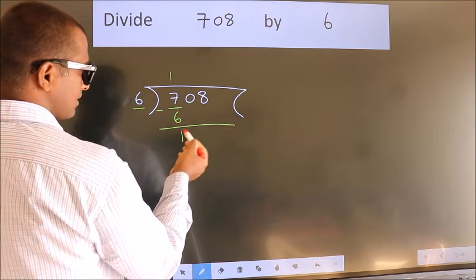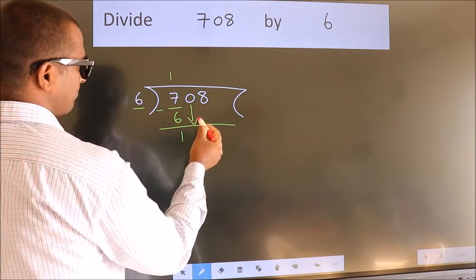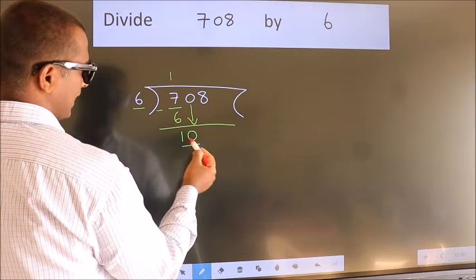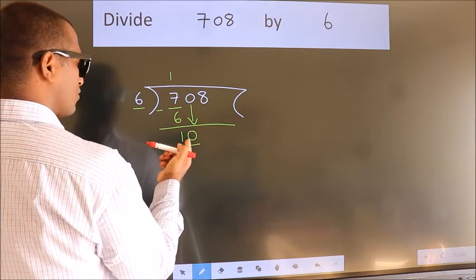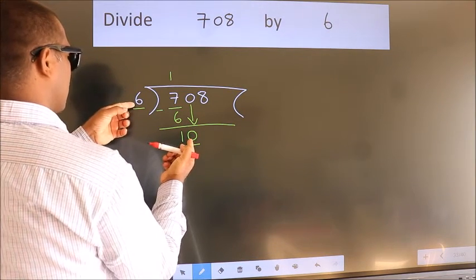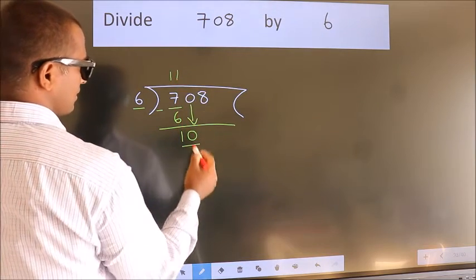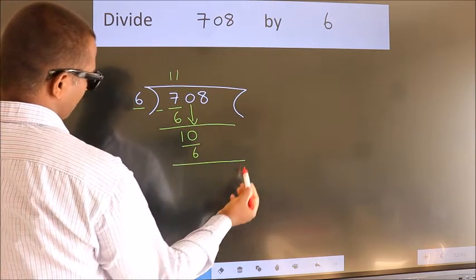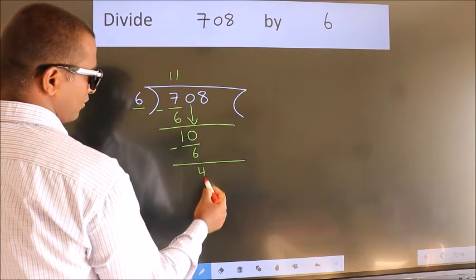After this, bring down the beside number. So 0 down. So 10. A number close to 10 in 6 table is 6 once 6. Now we subtract. We get 4.